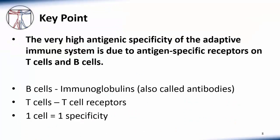The adaptive immune system is highly specific. The basis for this is that lymphocytes express highly specific antigen receptors. B cells express antibodies, while T cells express T cell receptors. Importantly, each cell expresses receptors with a single antigenic specificity.